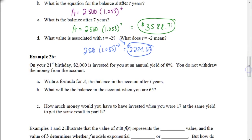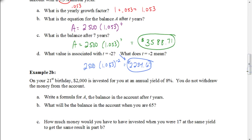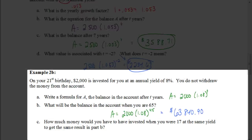Try this next one on your own. Pause the video and hit play when you're ready to check your answer. You should have gotten the equation 2,000 times 1.08 to the T power for part A. You might have a different answer for part B — be careful, because we're starting on the age of 21.